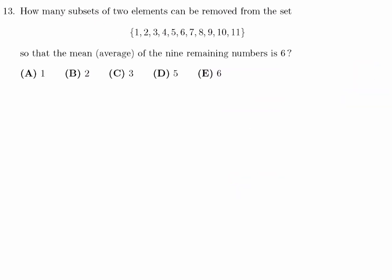How many subsets of two elements can be removed from this list so that the average of the nine remaining is six? Well, first of all, if we have a sum, we can help this question along. And when we add up all those guys, it's 66.